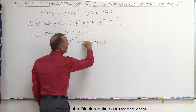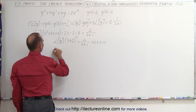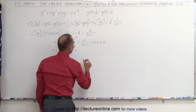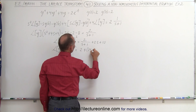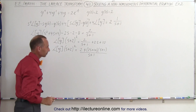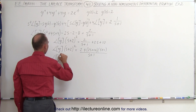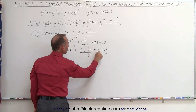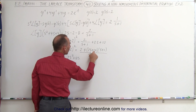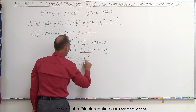Now we write everything over a common denominator by multiplying through, so we can say the Laplace transform of y times s plus 2 squared equals 2 plus 2s plus 10 multiplied times s plus 1, all written over s plus 1. Combining and simplifying, the Laplace transform of y equals 2s squared plus 12s plus 12, all divided by s plus 1 times s plus 2 quantity squared.